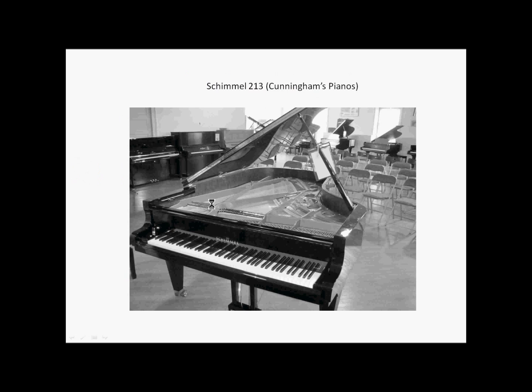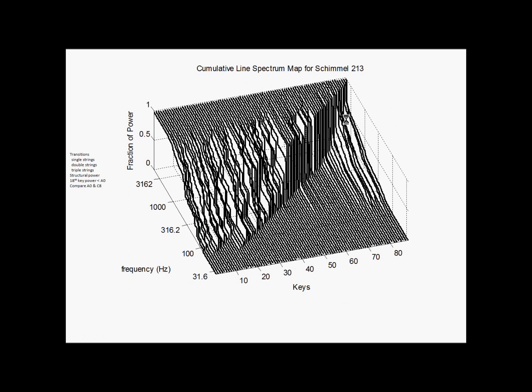Now let's go to the other European piano, the Schimmel 213, again at Cunningham's Pianos. Here is the similar plot. There is structural power here. There is a little bit less. This probably has the least of the ones of the acoustic pianos. And then it has this cliff right here, which I'll talk about later. Then we've got the transitions, triple string, double string, single string.